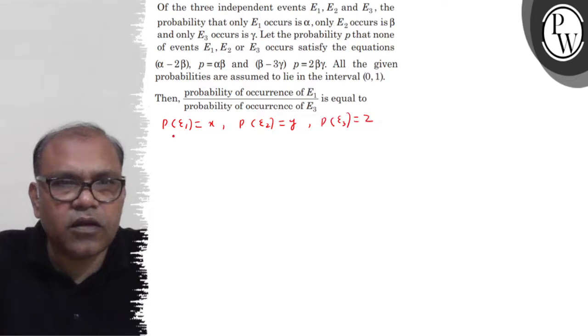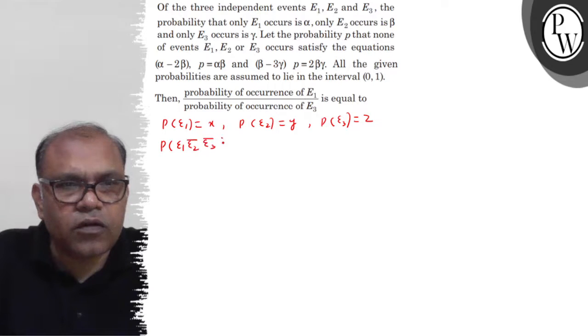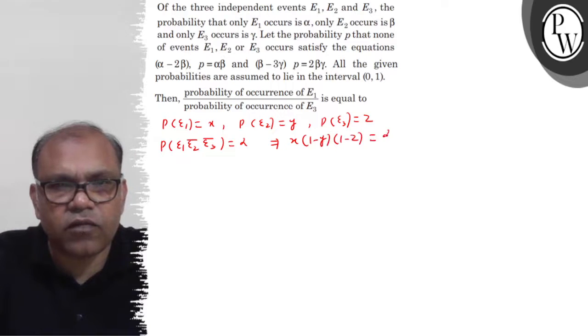Now let's see the question. The probability that only E1 occurs is alpha. So it means P(E1, E2 not, E3 not) equals alpha. This implies X into (1 minus Y) into (1 minus Z) equals alpha. This will be equation first.